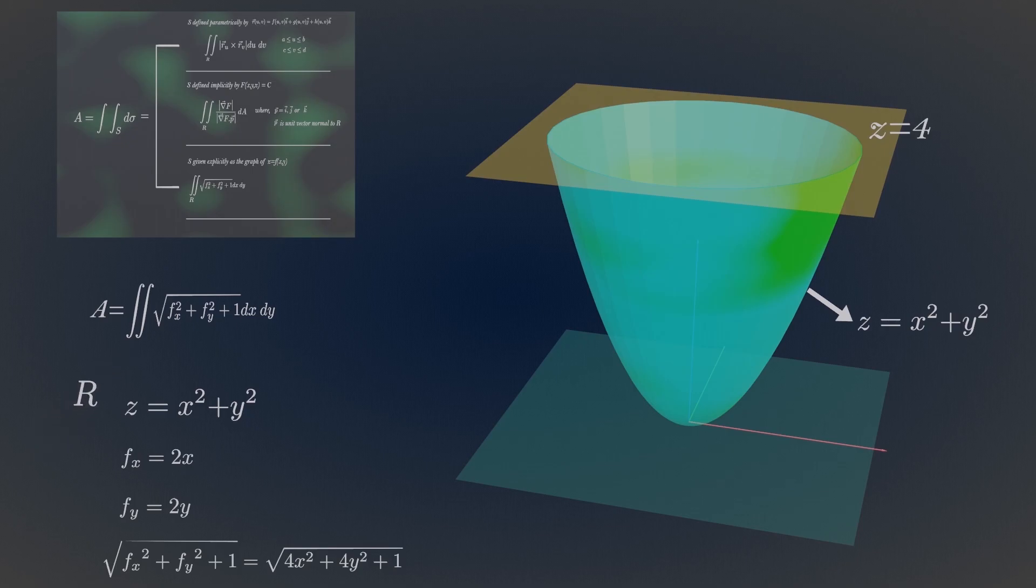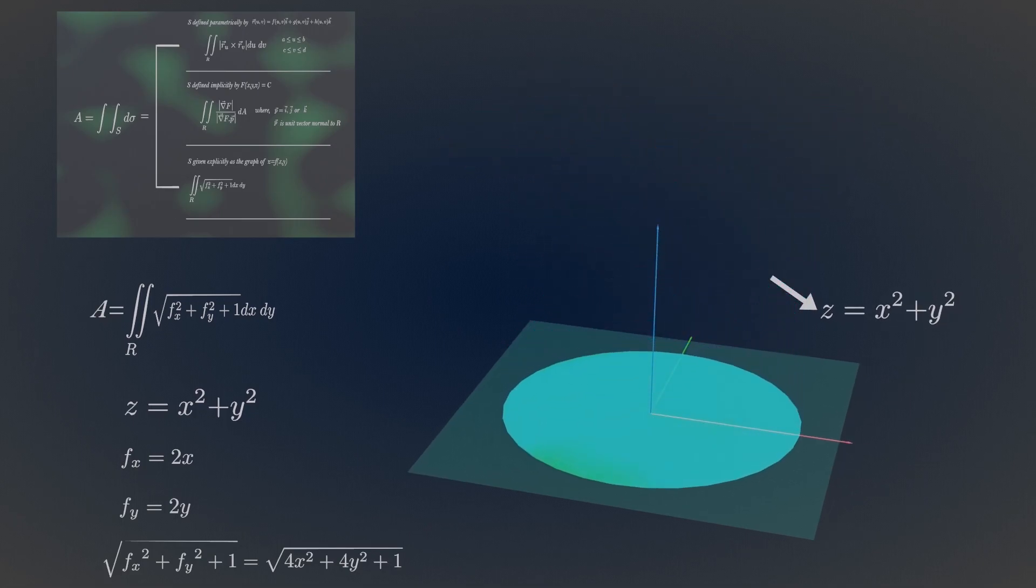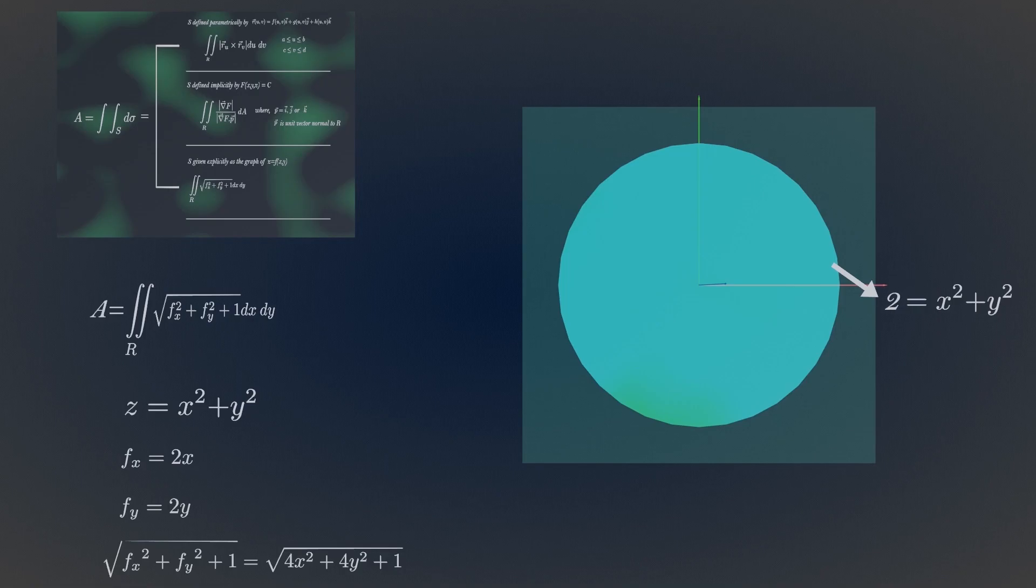Now in order to find the region R, project this paraboloid in the x, y plane, which is a circle of radius 2.